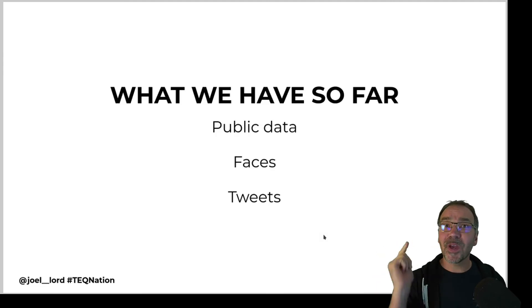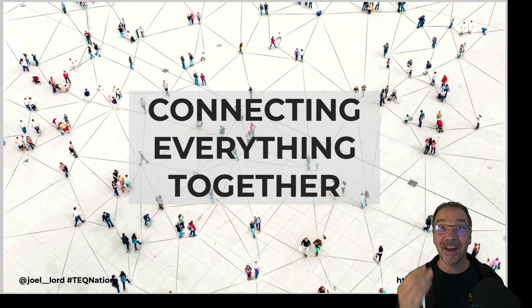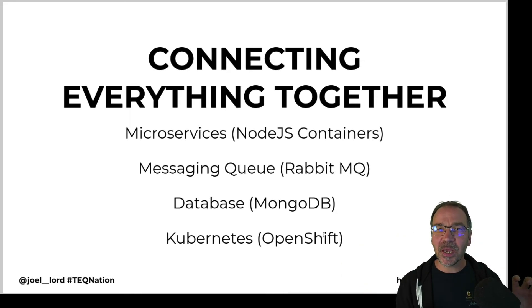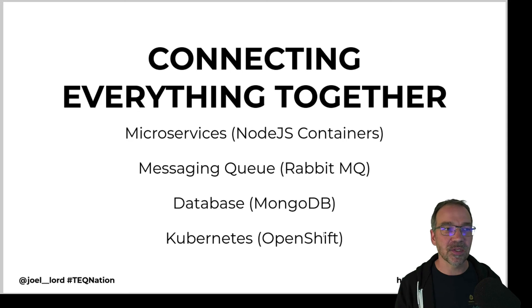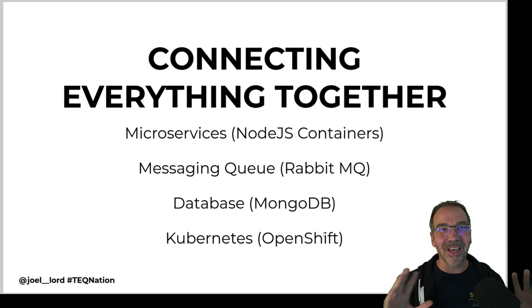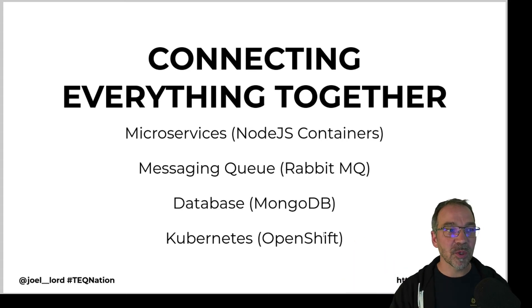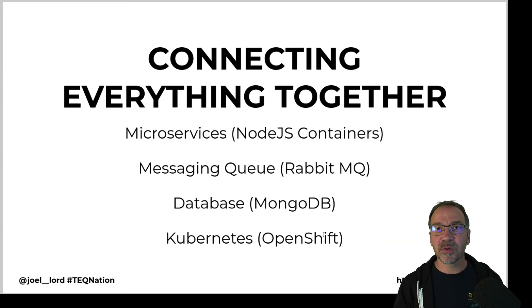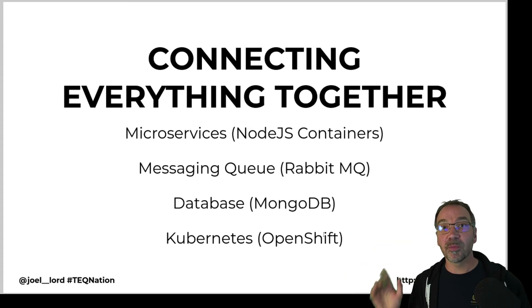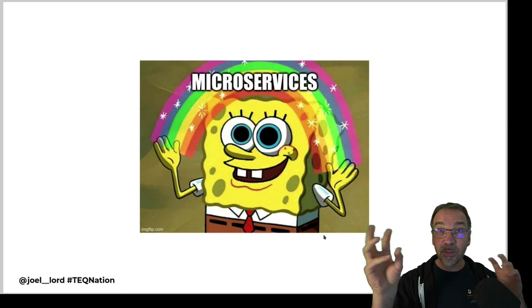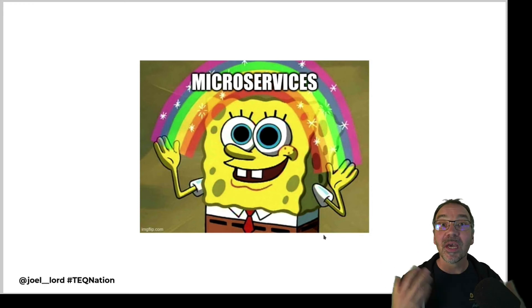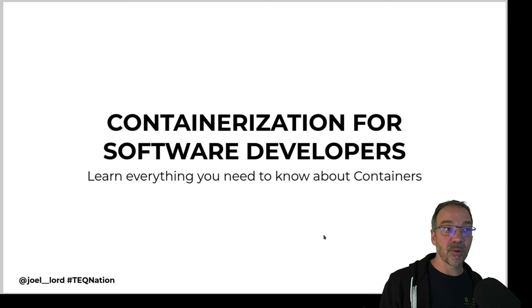So far I've got public data, faces, and tweets — now is the time to connect everything together and build the application. I had all those little samples and didn't want to rewrite everything as one big application, so I decided to use microservices with Node.js containers. I needed a way for each service to communicate with the others. Initially I tried REST APIs, but that didn't work. I turned to messaging queues using RabbitMQ, used MongoDB for storing data, and used Kubernetes — more specifically OpenShift — to connect all the containers together. Microservices let me reuse all those proof-of-concept snippets directly inside different containers.